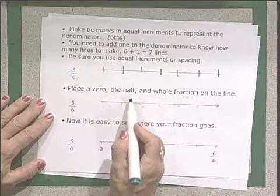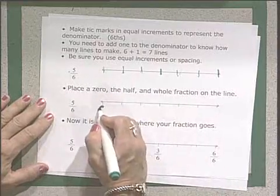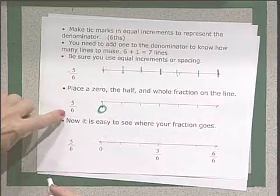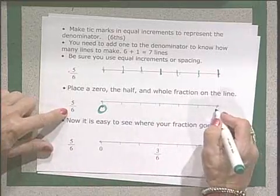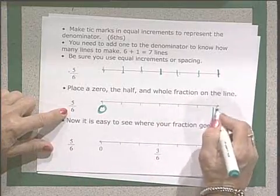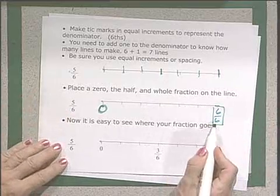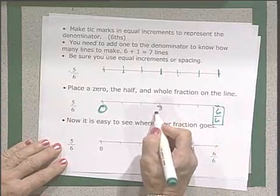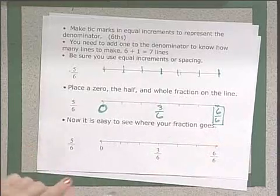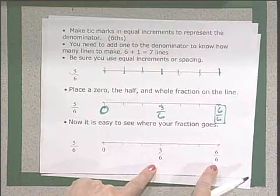Place the zero, the half, and the whole. Zero's always at the beginning. The whole, we're dealing with six, so we have six sixths, which equals to one whole. Half of six is three, so we know that three sixths goes in the middle. Zero, three sixths, six sixths.